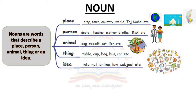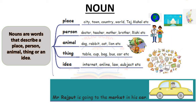And yes, for ideas: internet, online, law, subject, etc. So these are the names given to various things around us. Let's look at an example: Mr. Rajput is going to the market in his car. In this sentence, Mr. Rajput, market, and car are nouns. Mr. Rajput is the name of a person, market is the place he is going to, and car is the thing he will be traveling in. This is how we are aware of many nouns on a daily basis whenever we speak, read, or talk to anybody.